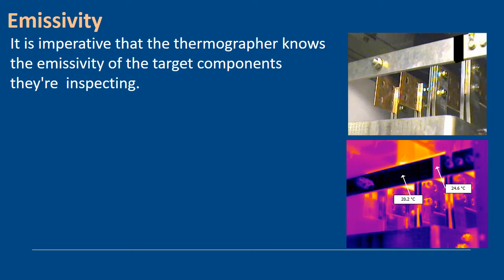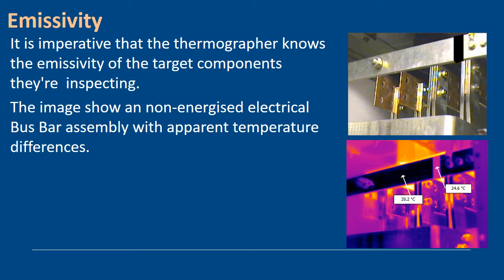If we look at the infrared image, we can see that basically it looks like we've got temperature differences, but this image shows a non-energized bus bar assembly with apparent temperature differences. This is actually in the manufacturer so it's never been turned on. If you look at the electrical tape on the infrared image, you can see there I have a reading of 24.6, but the bus bar section here, the shiny bus, looks much cooler because it's reflecting a background temperature.